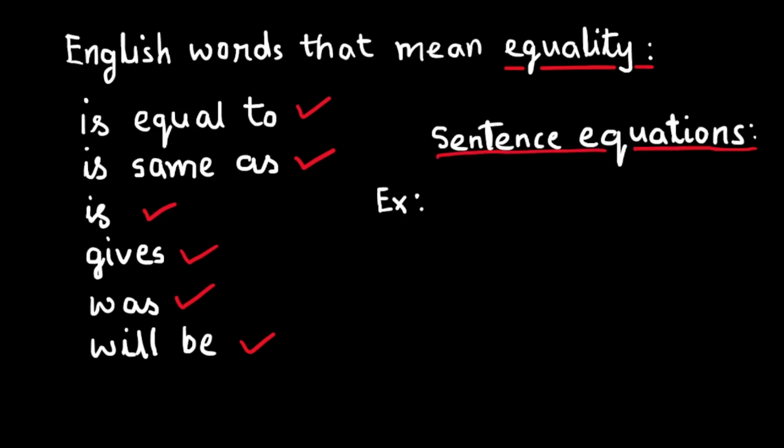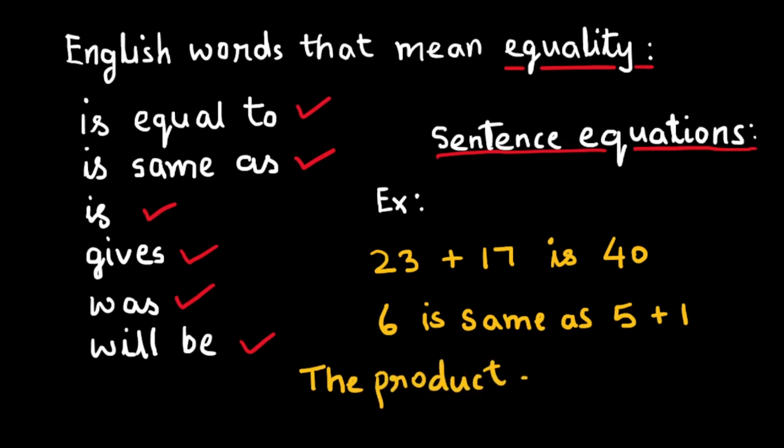For example, 23 plus 17 is 40. 6 is same as 5 plus 1. The product of 3 and 4 will be 12.